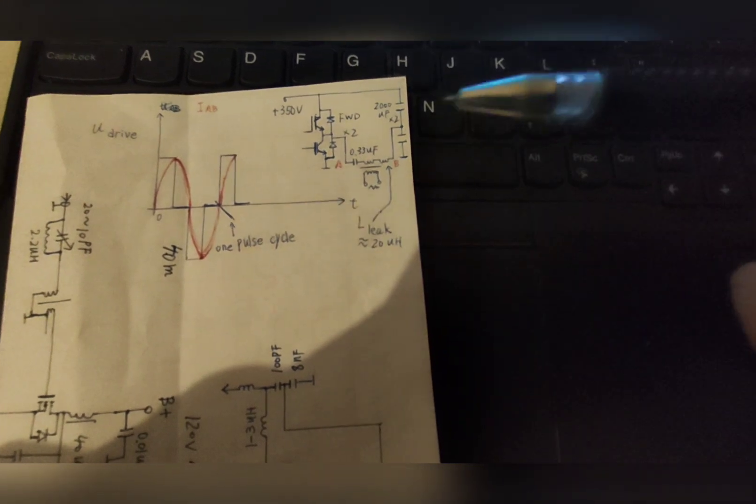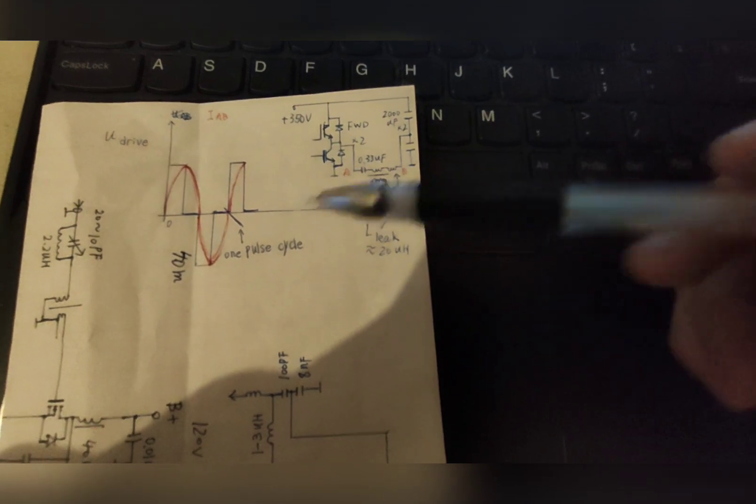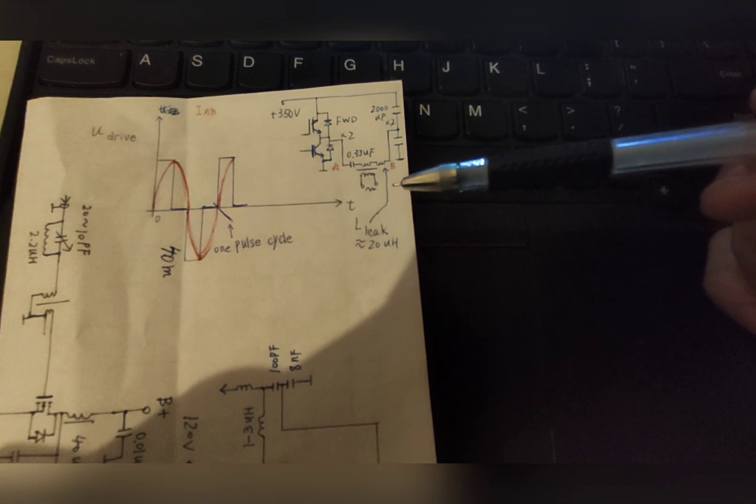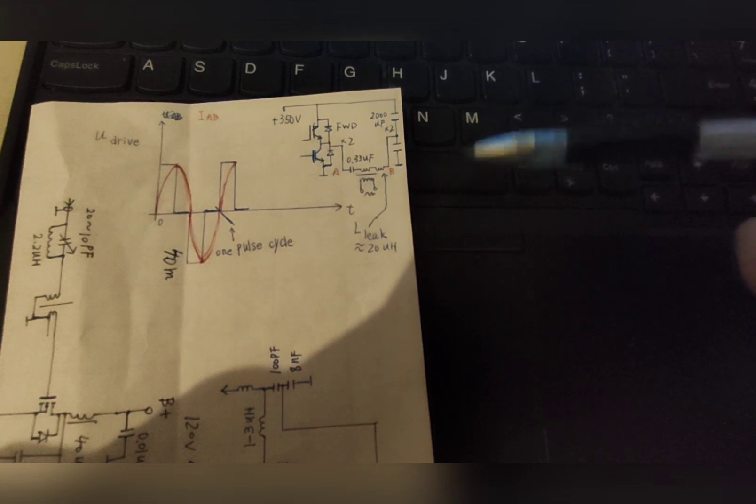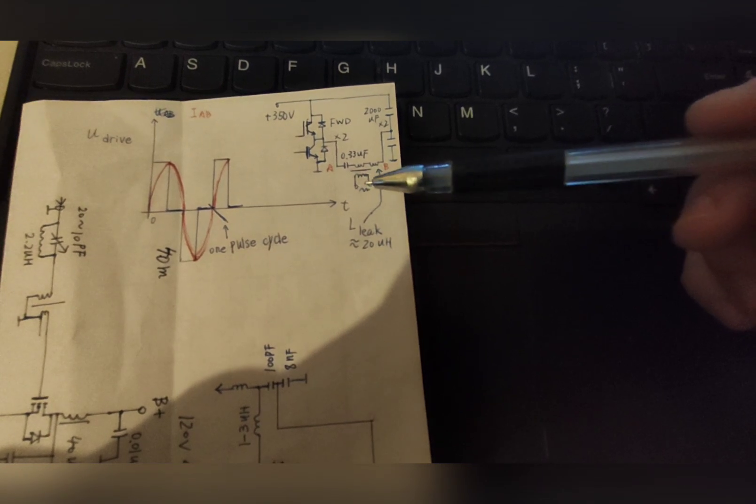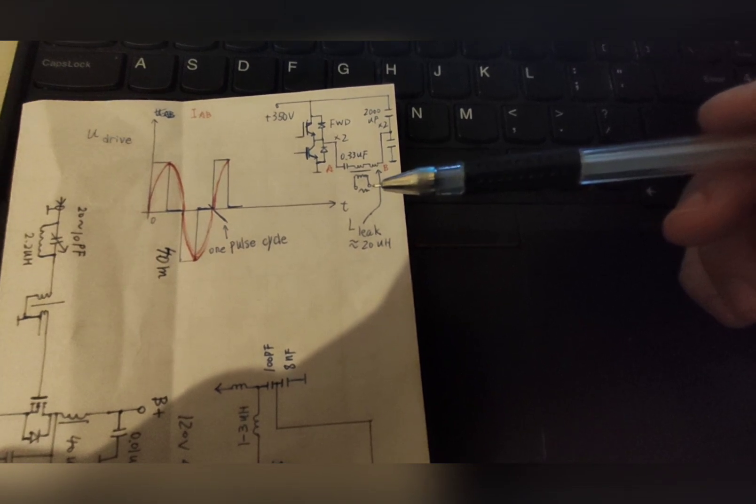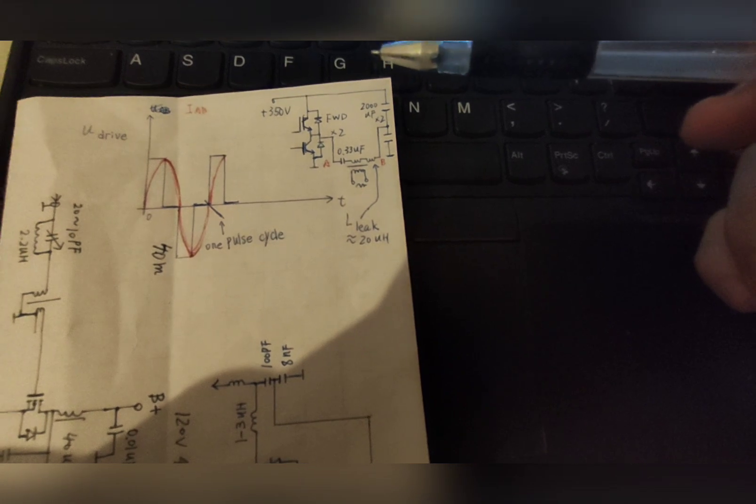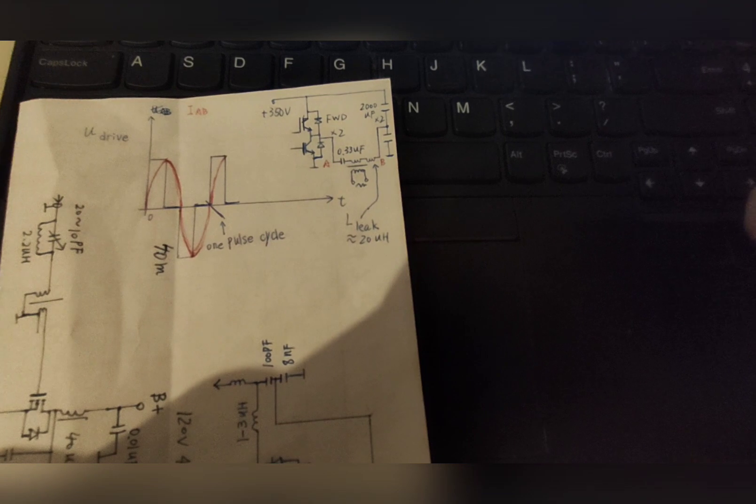You may ask why I use this strange topology. Because if this circuit is used as a high voltage power supply for something like a Jacob's ladder, or simply for drawing some arcs, the load resistance here is actually varying from nearly a short circuit to a few kilo ohms. So you need a power supply which can stand a short circuit or simply an open circuit condition.